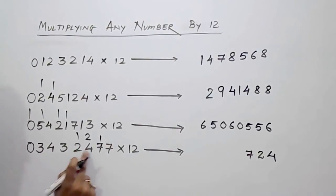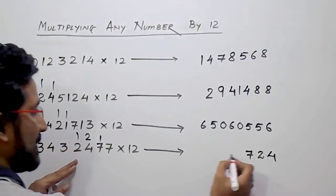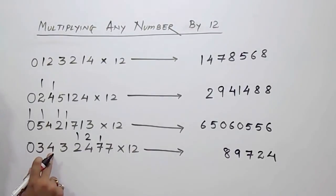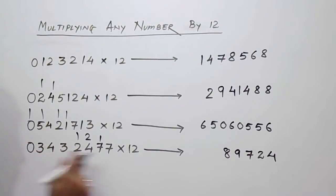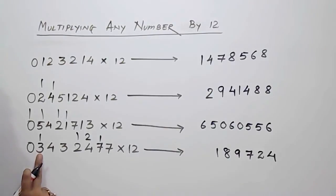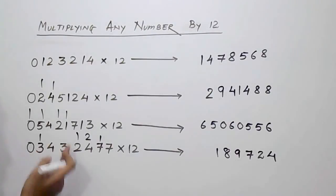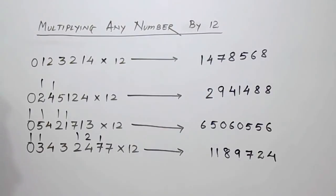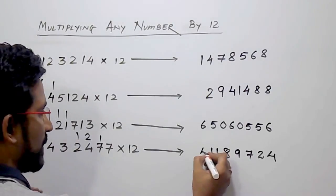2's double is 4, 4 plus 4 is 8, plus 1, it will be 9. Now 3's double is 6, 6 plus 2, it will become 8. Now 4's double is 8, 8 plus 3, that is 11, so 1 will be carried. Now 3's double is 6, 6 plus 4 is 10 plus 1 is 11, so 1 will be carried. Now 0's double is 0, 0 plus 3 is 3, then plus 1, so it will become 4.